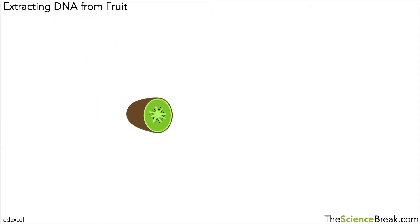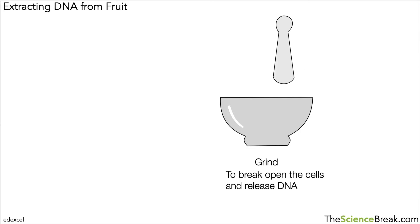The first step is to get the kiwi fruit and peel it to remove the skin, because we'll be extracting DNA from the fruit itself. We need a pestle and mortar. We can slice up the kiwi fruit and then grind it up in order to break open the cells and release the DNA that's inside. That's the first stage.